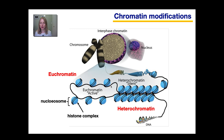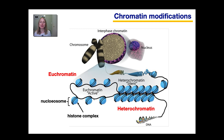Chromatin can be divided into two subdivisions. Some chromatin is referred to as euchromatin, which is more loosely packaged, whereas other chromatin is heterochromatin, which is much more tightly packaged DNA. Euchromatin is active in that transcription can happen in euchromatin regions. But heterochromatin is silent — it is not accessible to RNA polymerase for transcription.